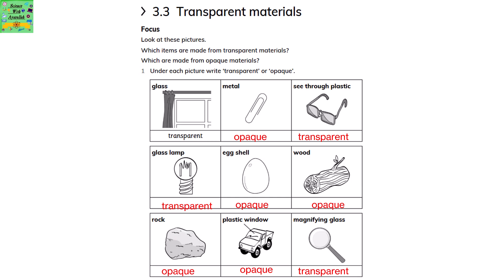Transparent materials. Look at these pictures. Which items are made from transparent materials and which are made from opaque materials? Transparent materials are those that can be seen through — for example, glass or a window. Opaque materials are those that cannot be seen through — for example, wood.